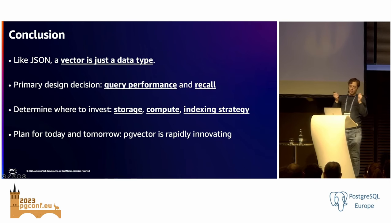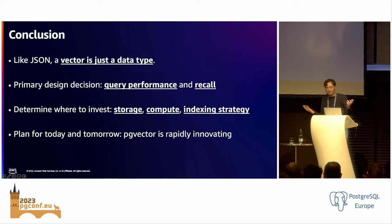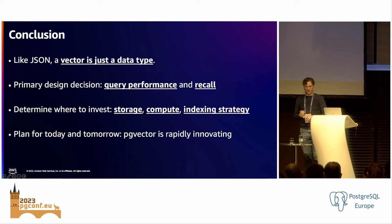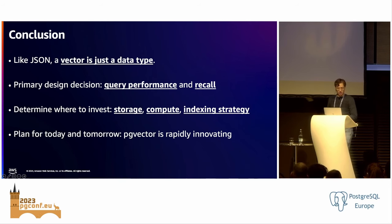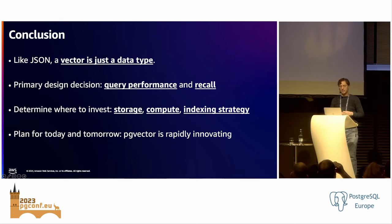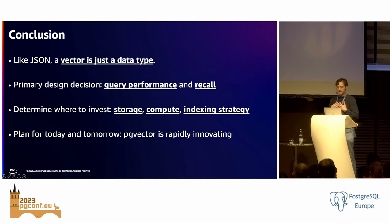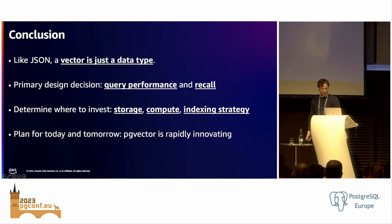In conclusion, to bring it back around: vectors are a big deal for the app developer, similar to the way JSON was 15 years ago — and JSON is still a big deal today. Much like JSON, it's just a data type. Postgres is really good at storing structured data, very good at being extended to support all the different methods around storing structured data, and it's really good at being a database — it does a lot of things for you that you don't need to worry about. You will have a design decision between query performance and recall as you build with vector data. And this is rapidly evolving, so plan for tomorrow as well as today. I was an early adopter of Postgres JSON functionality, and as Postgres added more features I was able to easily adopt those into my app. Thank you so much.